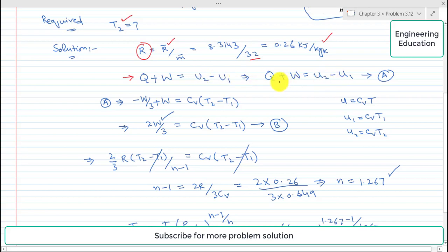Where small u represents specific internal energies. So putting the value of Q which is minus W by 3 in this expression, so minus W by 3 plus W is equal to Cv into T2 minus T1.